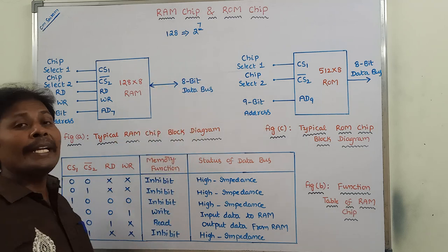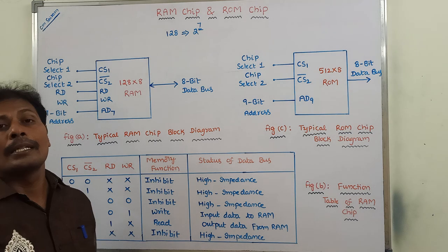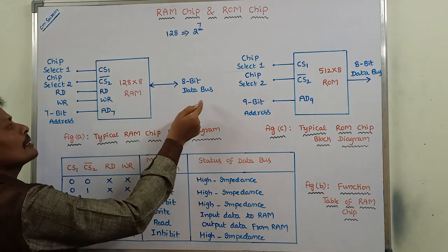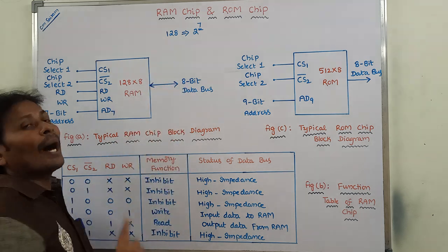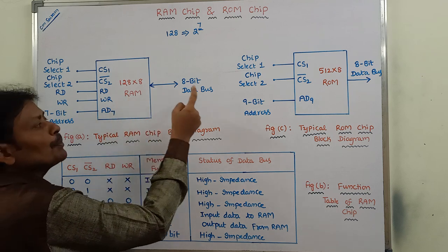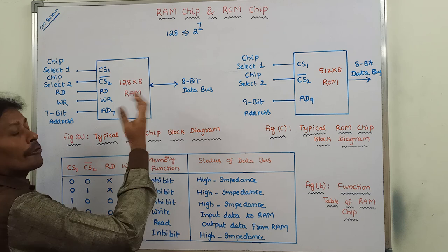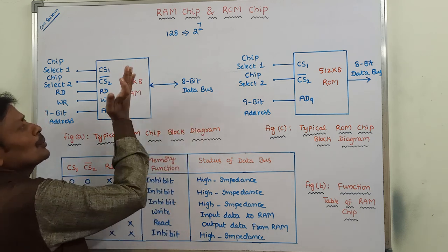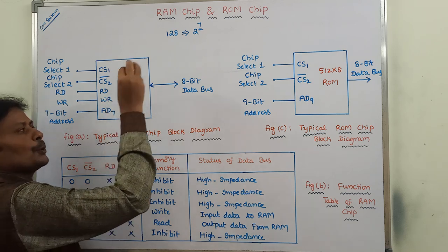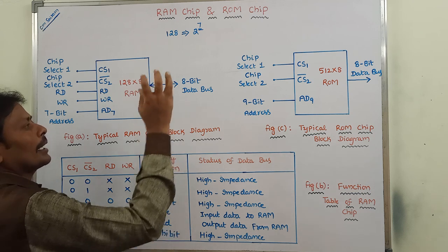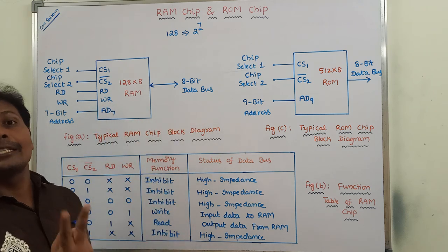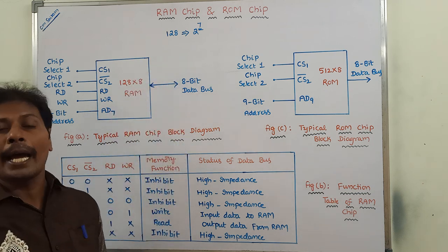There is also an 8-bit bidirectional data bus. This bidirectional data bus allows the transfer of data either from the RAM to the CPU or from the CPU to the RAM. During the read operation, the transfer of data from the RAM chip to the CPU is done. During the write operation, the transfer of data from the CPU to the RAM is done. Since data can be transferred in two directions, a bidirectional data bus is used.